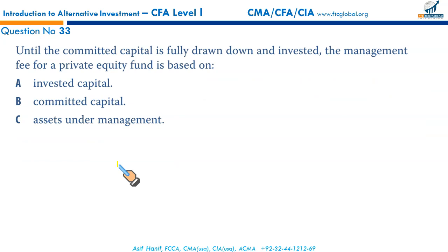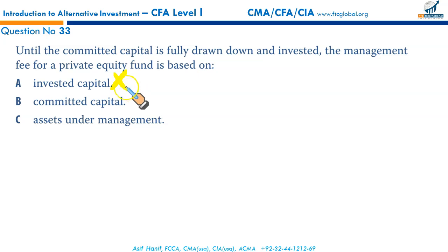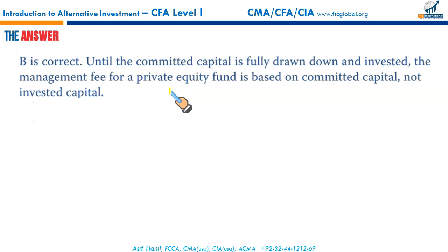Until the committed capital is fully drawn down and invested, the management fee for a private equity fund is based on committed capital — not invested capital. That makes B — committed capital — the correct option.